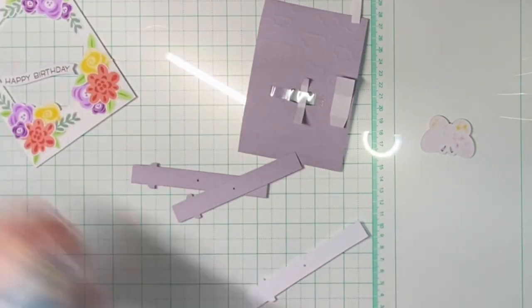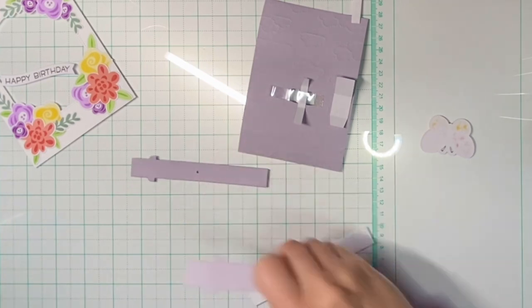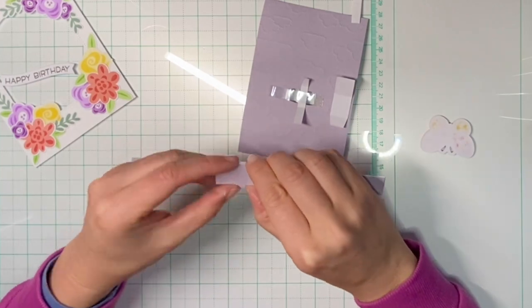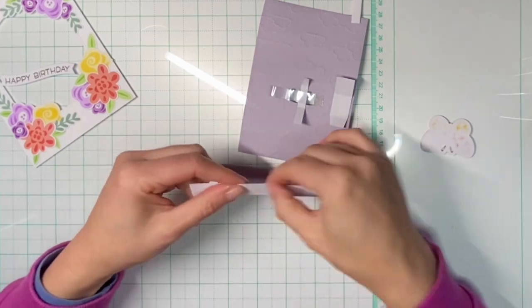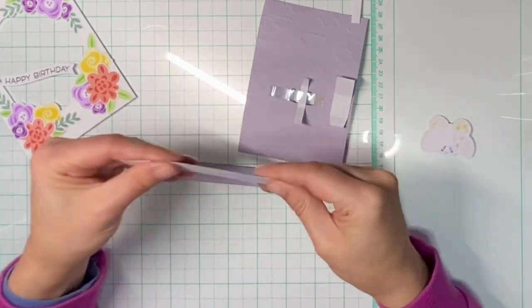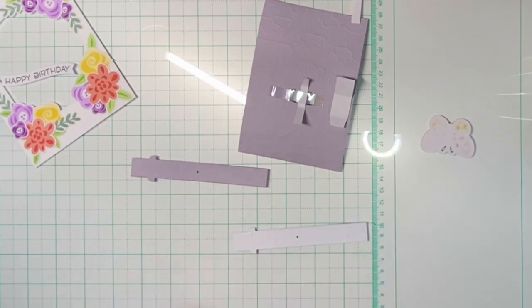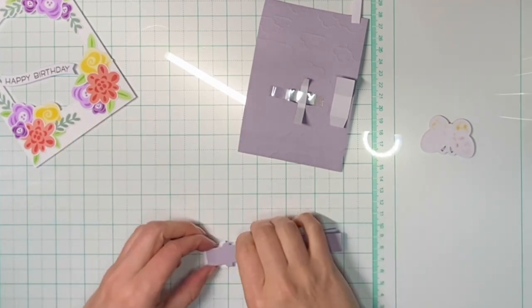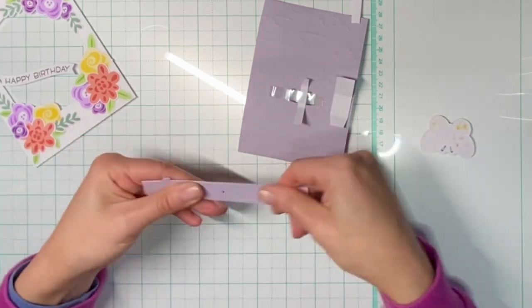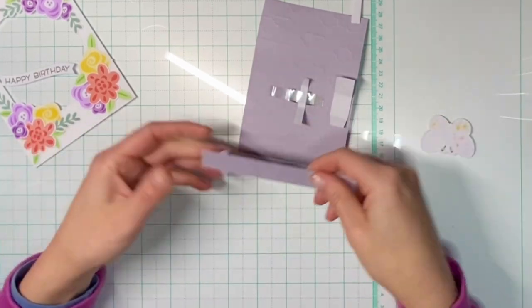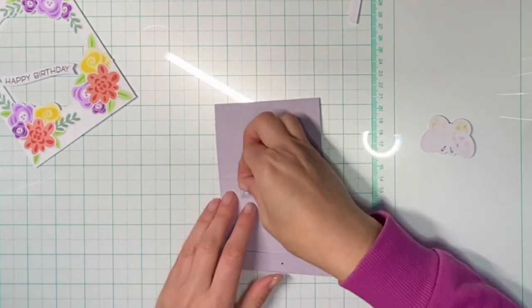Now I'm adhering the three pull tab pieces together. I'm doing this A, because of having the same color as my background, and B, for more stability, because I have to pull really hard when I use two strips of acetate and I don't want the pull tab to bend or tear or anything. So I'm making it as stable as I can.